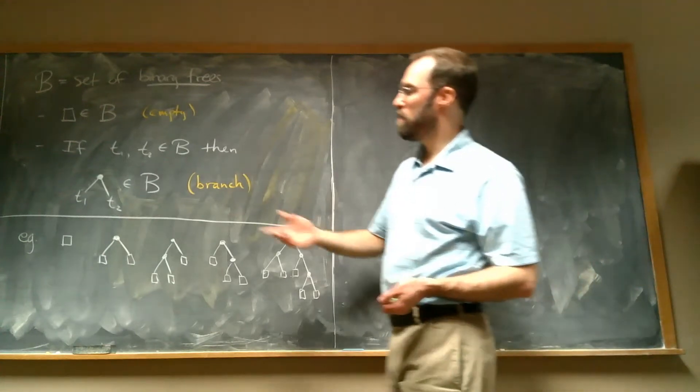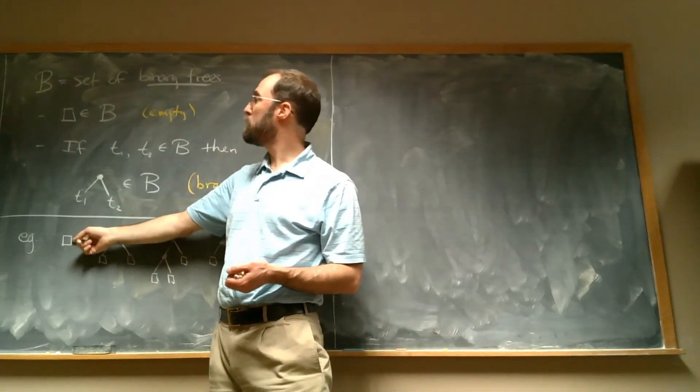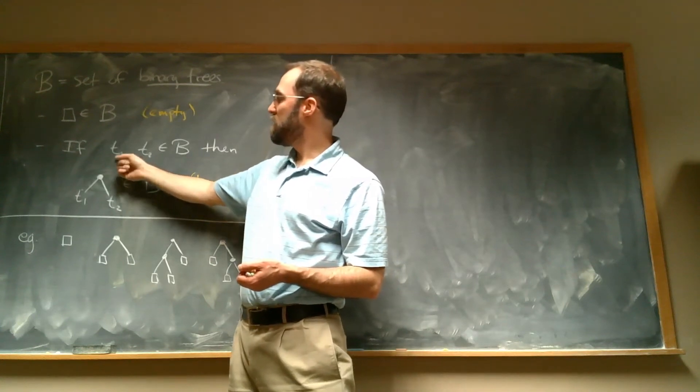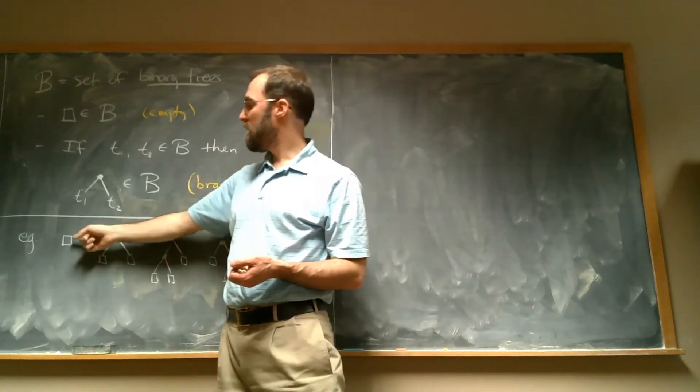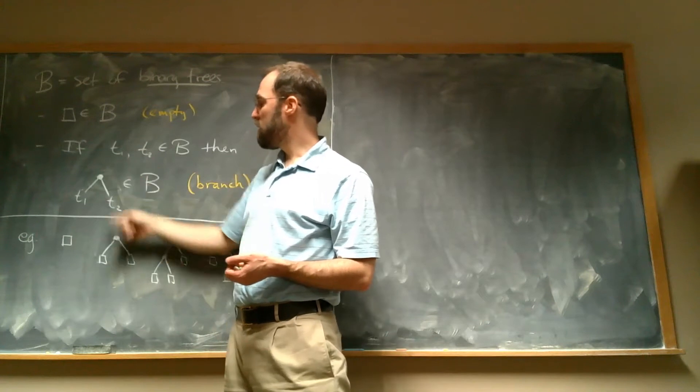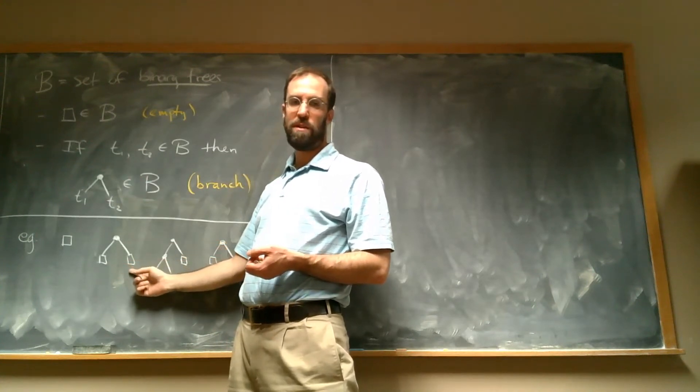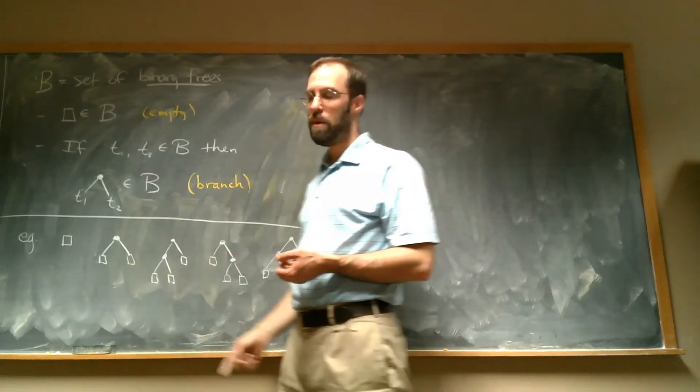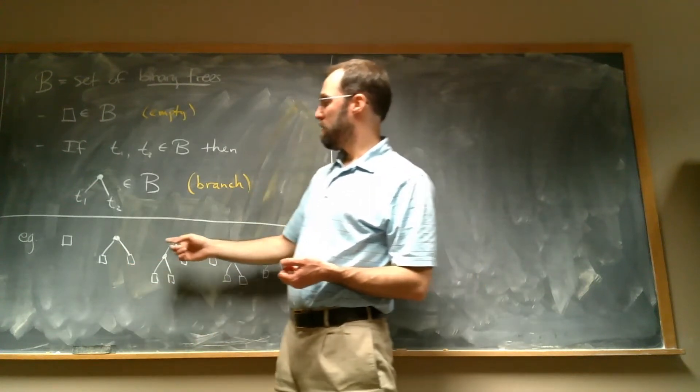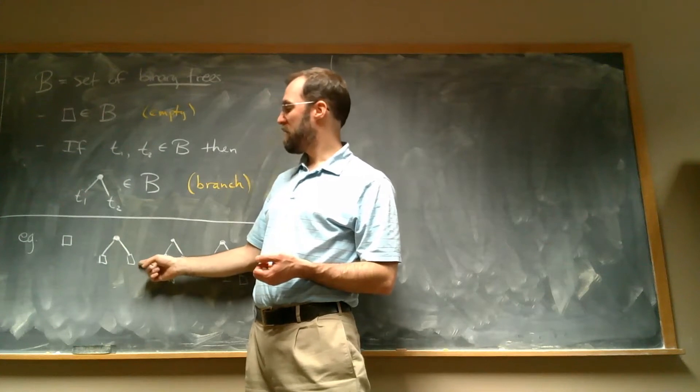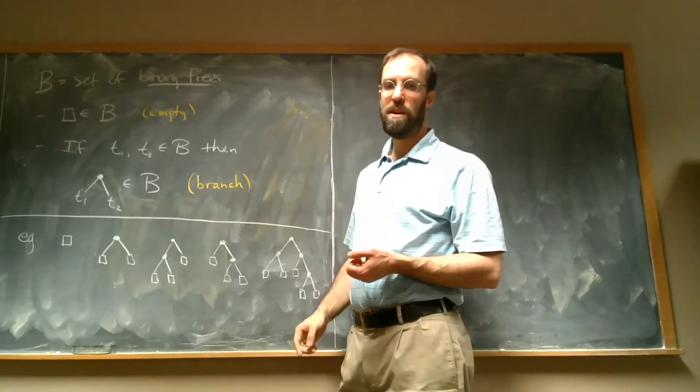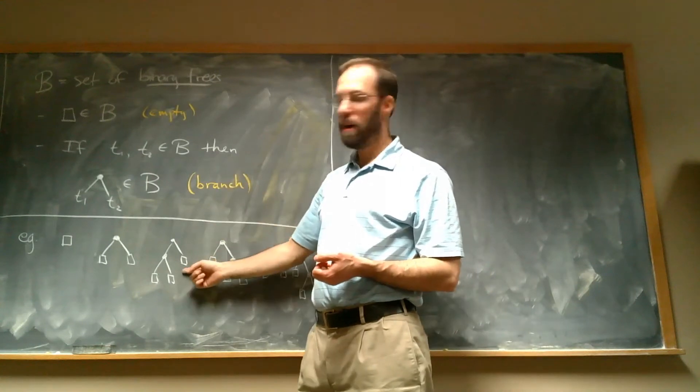So for example, we already said that this empty tree is in there. If T1 and T2 are both the empty tree, then if I apply this rule, I get this tree here with a single branch and then just two empty trees under it. I can now take, for example, now that this tree is in my set, if I take this tree as T1 and the empty tree as T2 and I apply this rule, I get this.